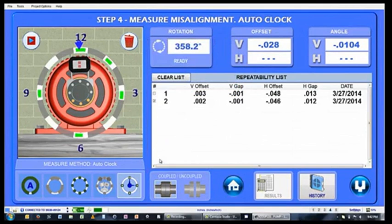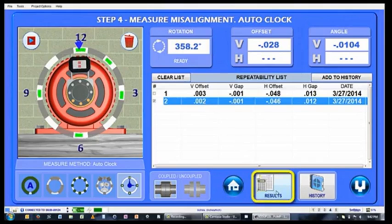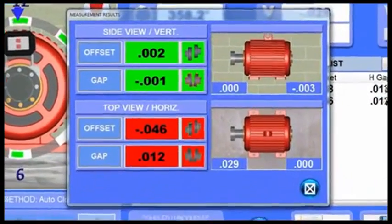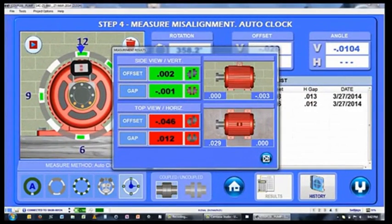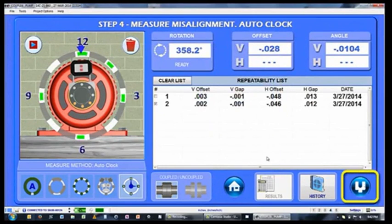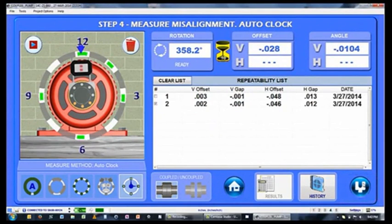To see if the alignment data is in tolerance, tap on the set of data and click the results button to open the measurement results screen, which shows the data with the tolerances applied from step 1. Green means the results are excellent, yellow means they're acceptable, red means they're out of tolerance. If the alignment is out of tolerance, close the results popup and click on the shim icon to automatically save the data and open step 5, live move screen.